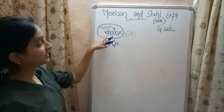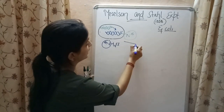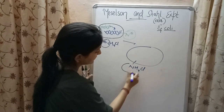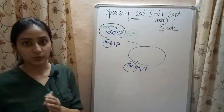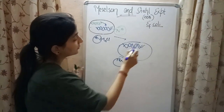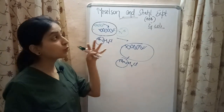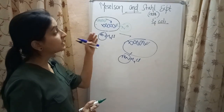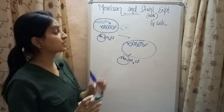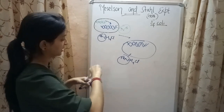This E. coli bacteria containing N15 type nitrogen bases was then allowed to grow in NH4Cl where N was N14 type, the normal isotope of nitrogen. E. coli bacteria divides every 20 minutes, so after every 20 minutes the nature of the strands of the DNA was observed. The DNA containing N15 type nitrogen bases can be easily distinguished from the normal N14 DNA through a process called centrifugation.